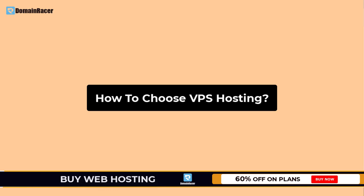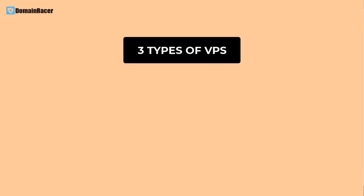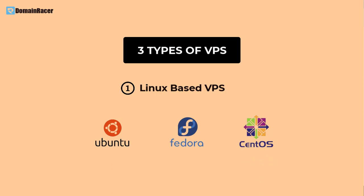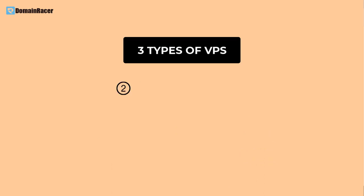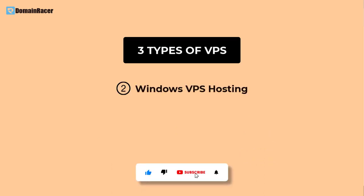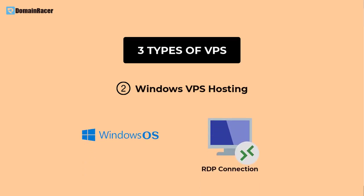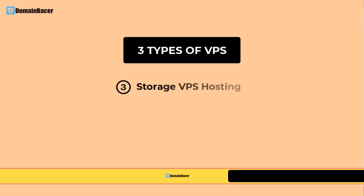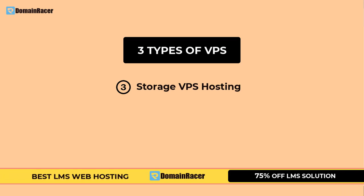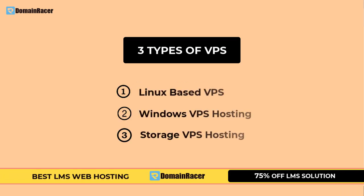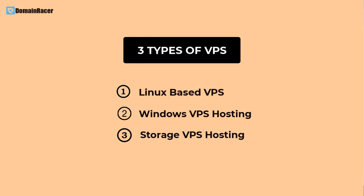Now, the very first question: how to choose a VPS hosting? VPS are basically of three types. The first is Linux-based VPS, which includes various operating systems like Ubuntu, Fedora, and CentOS. The second type is Windows VPS, where you get a Windows operating system and can take remote desktop (RDP) connection. The third type is Storage VPS, used for storage purposes.